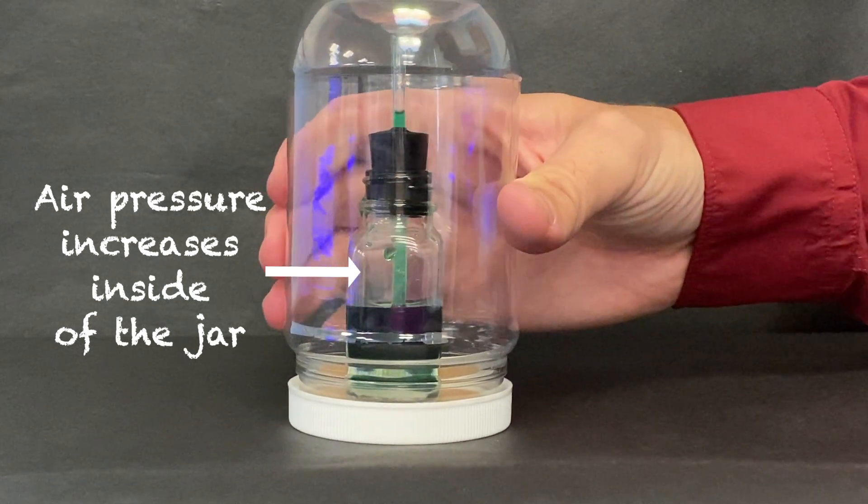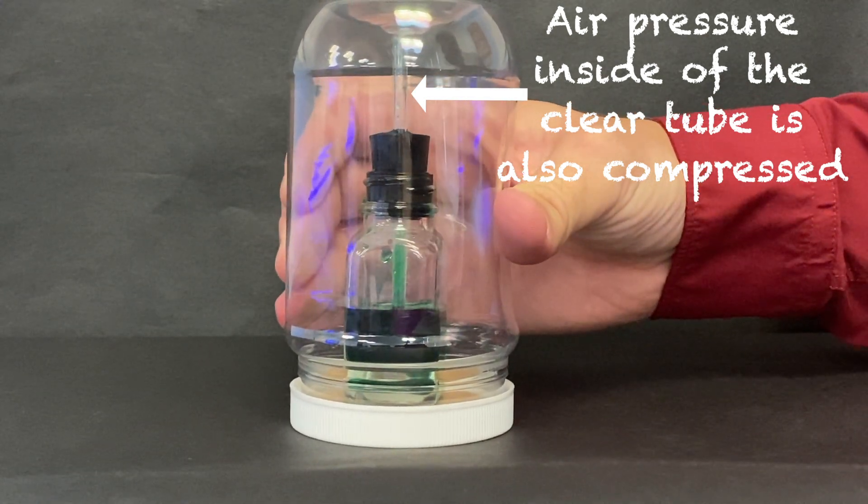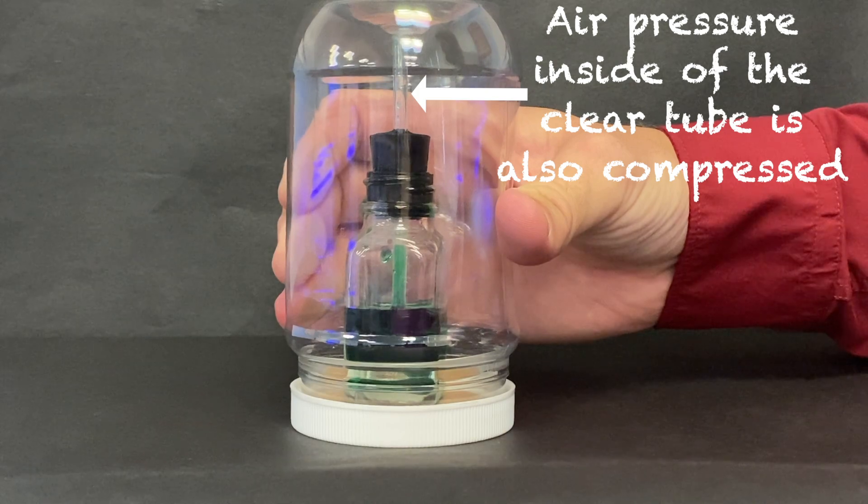The air inside the top of the clear tube is also compressed. It pushes down with more pressure on the top of the water in the tube.